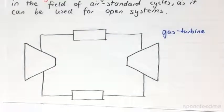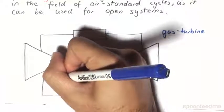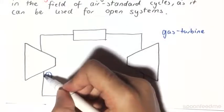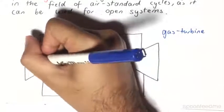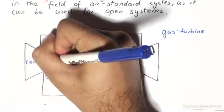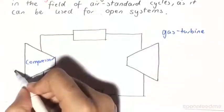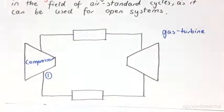So what happens in this gas turbine arrangement is that we have state 1 over here, where the air enters a compressor. And so therefore, work is going to go into the system over here.